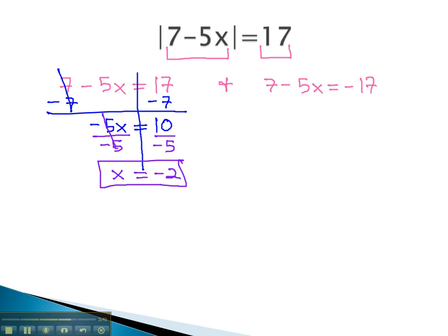We still must solve the second equation. Again, we balance through the equal sign, and begin by subtracting 7 from both sides. We now have negative 5x equals negative 24. To get the x alone, we divide both sides by negative 5. This gives us x equals the fraction, positive 24 fifths.